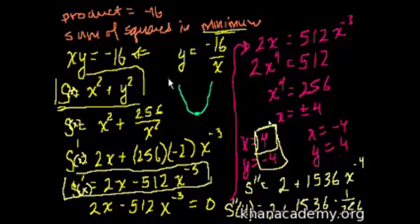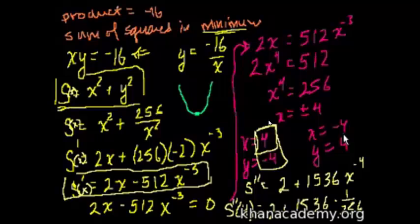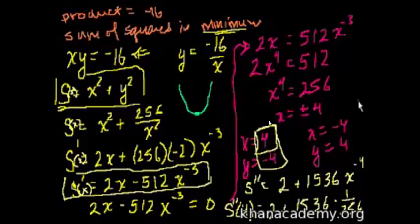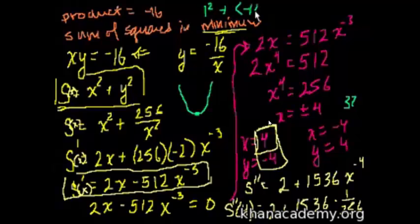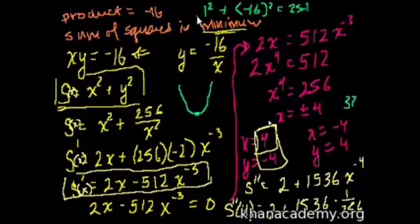To verify, the sum of squares at x equals 4 is 4 squared plus 4 squared equals 32. Trying other numbers: 1 and minus 16 have the product minus 16, but their sum of squares is 1 plus 256 equals 257 — much higher. Everything you try will have a higher sum of squares than 4 and minus 4.